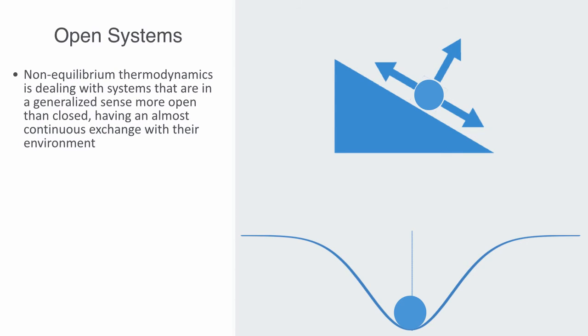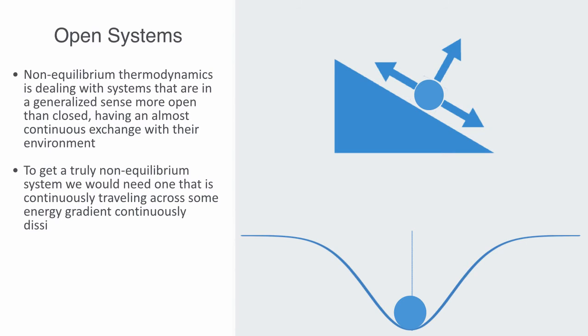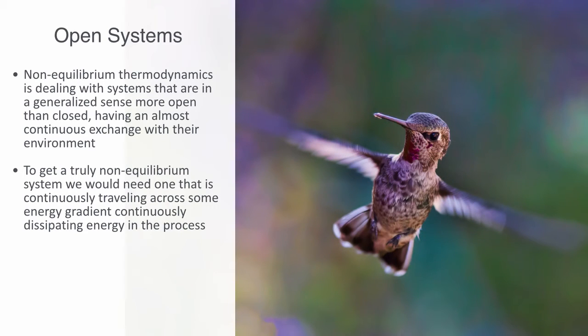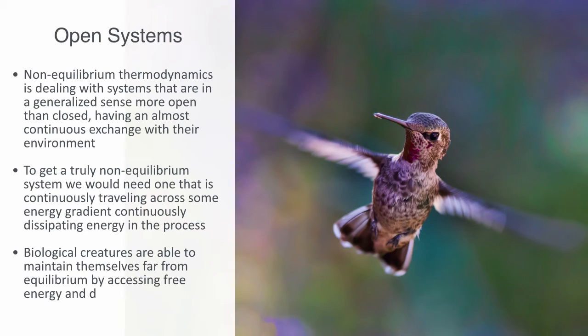To get a truly non-equilibrium system, we would need one that is continuously traveling across some energy gradient, continuously dissipating energy in the process. This is a dissipative system and it is exactly what biological creatures do. From a thermodynamic point of view, this is essentially what defines biological creatures. They are able to maintain themselves far from equilibrium by accessing free energy and dissipating it and reiterating on this process, in so doing continuously traveling across some potential energy gradient.